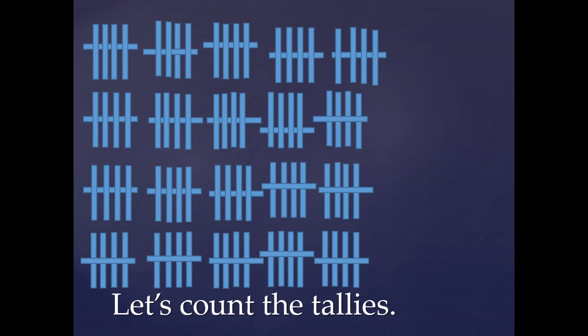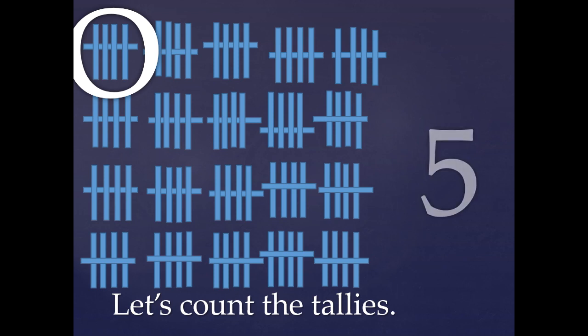Counting nickels makes me think of counting tallies. When we make tallies, we put them in groups of five. There are five tallies that are straight up and down, and one tally that goes right across. And when we count tallies, when we see a group like this, we can count by five, just like when we count nickels. Let's count these tallies together, and we're going to count by five while we count them. I want you to count with me.